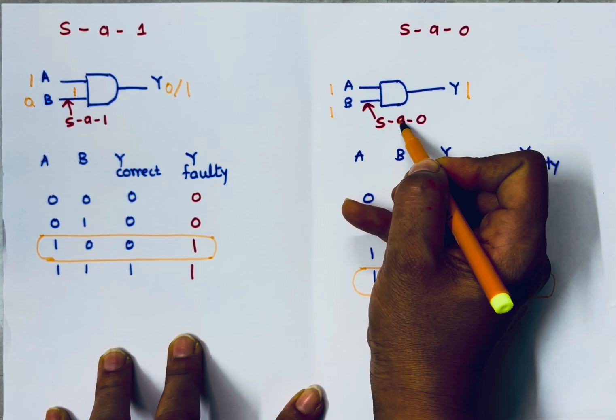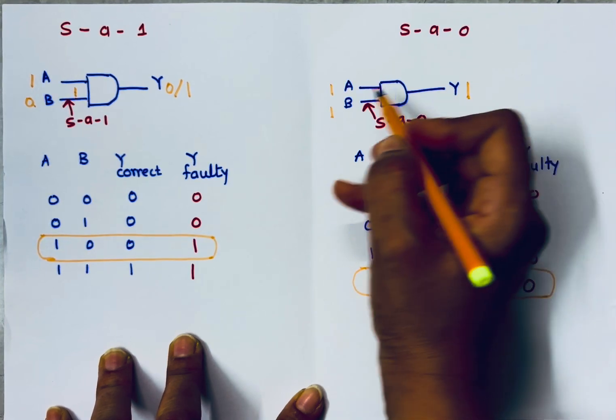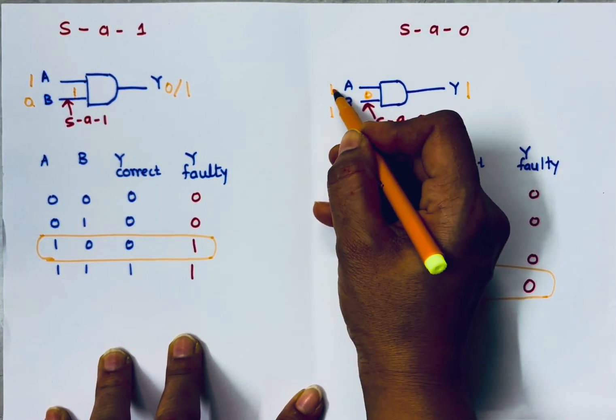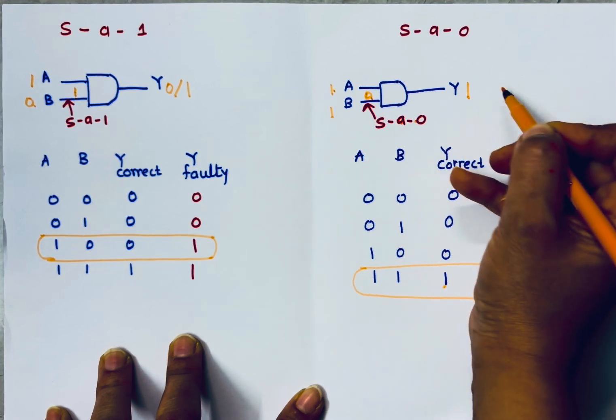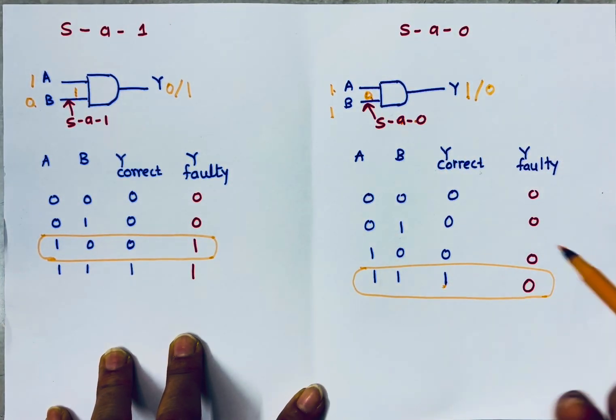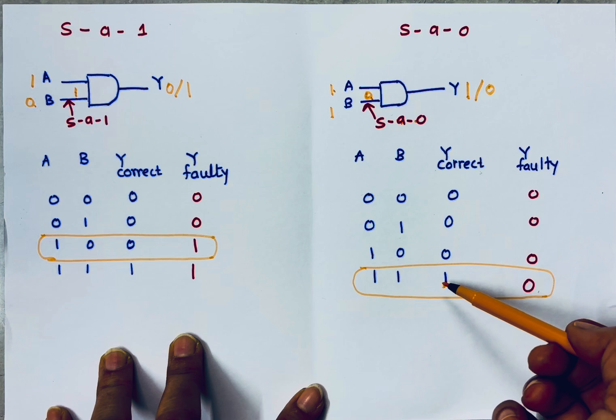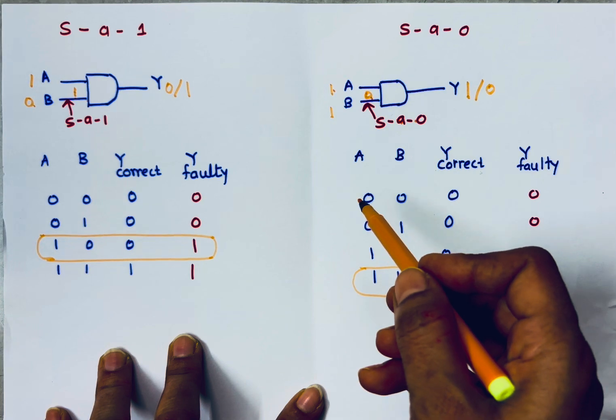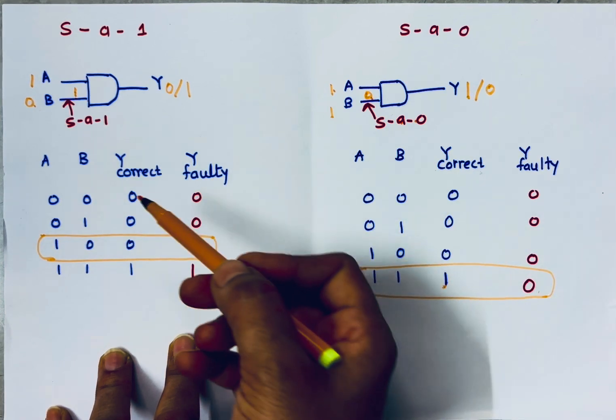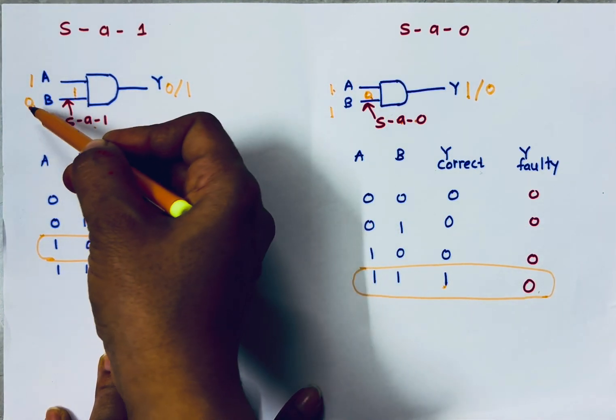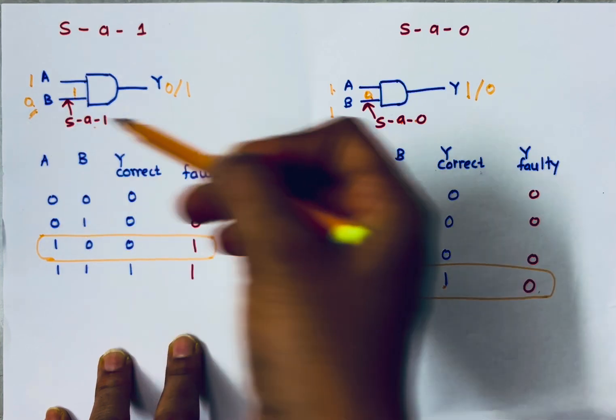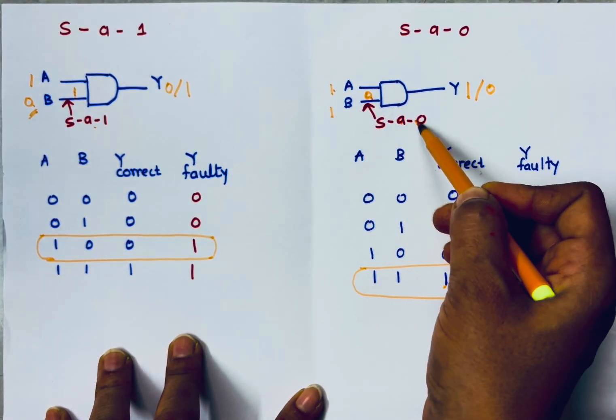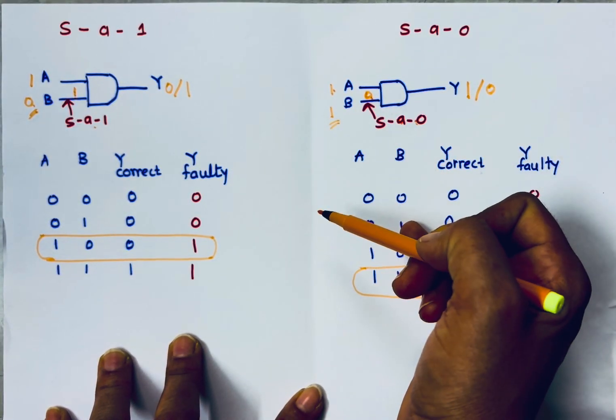But because input B is internally stuck to 0, because of this 0, 1 and another input is 0, so I will get output 0. Faulty output is 0 whereas correct output is 1. You need to remember to identify stuck at 1 and stuck at 0 fault. To identify stuck at 1 fault, we must apply input 0 and to identify stuck at 0 fault, we must apply input 1.